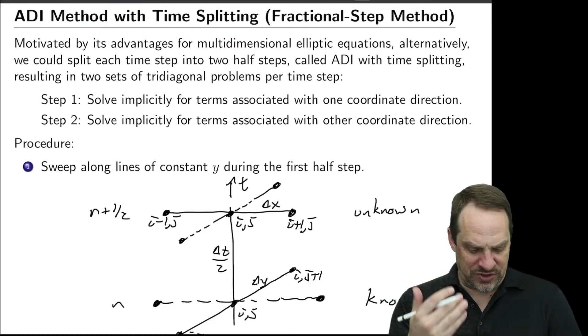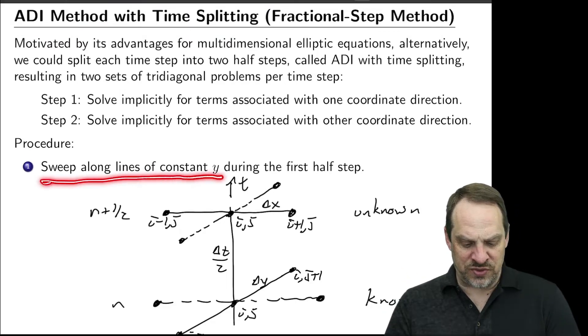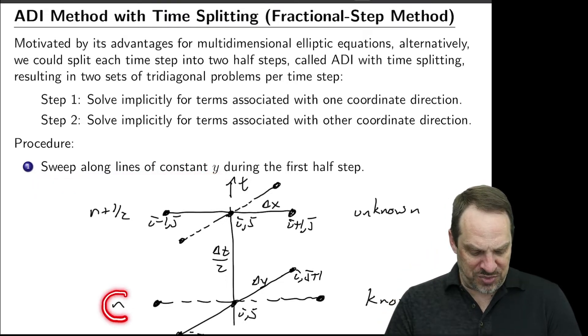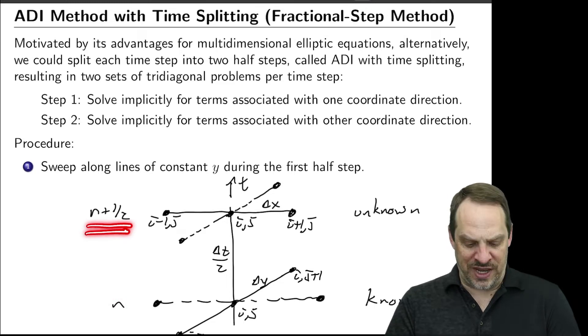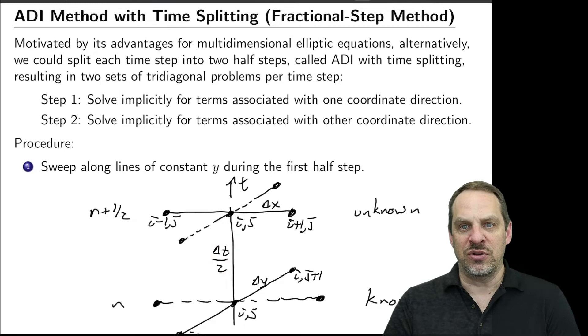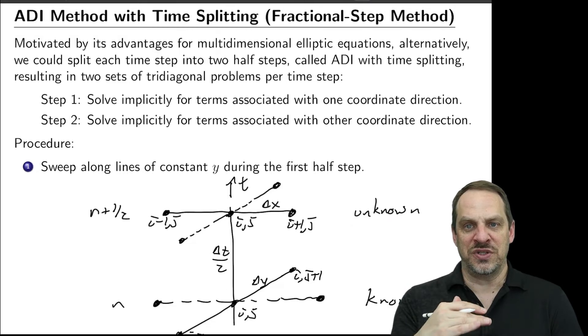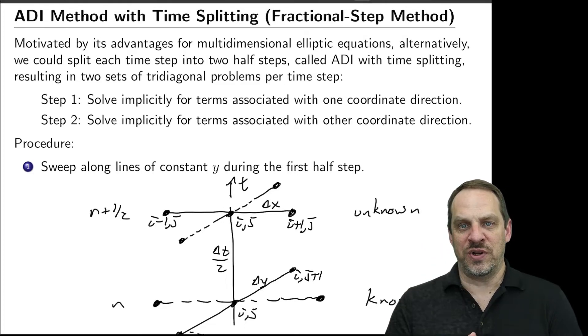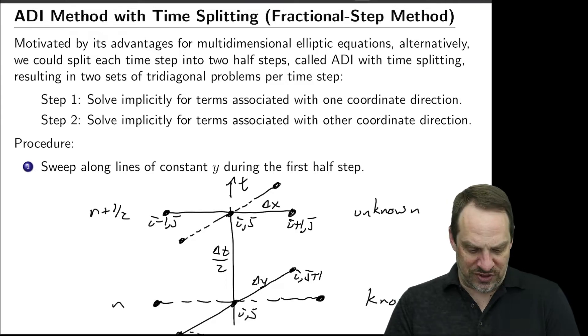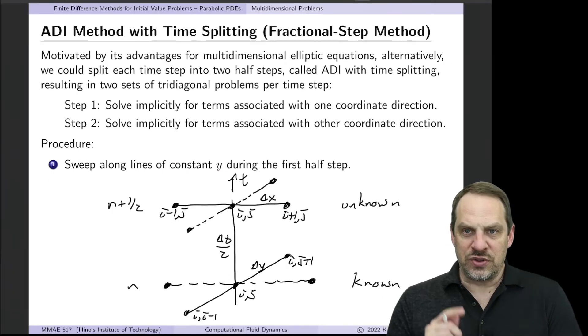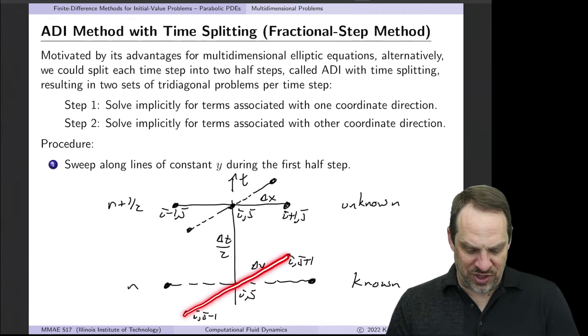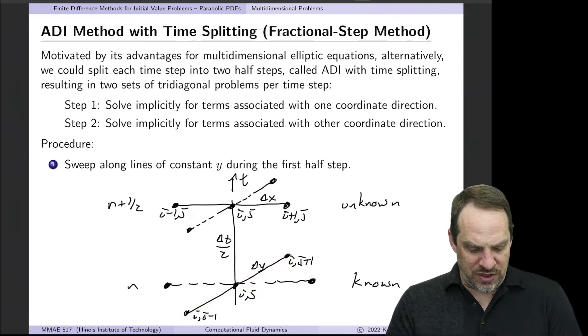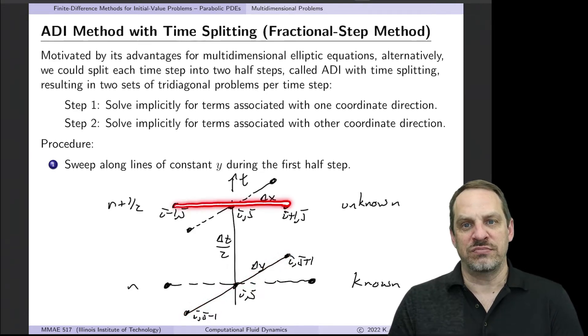So here's how it looks for that first step. If we sweep along constant y-lines first, during that first half step, then the previous time step is n, and we're going to take one half time step forward to n plus a half. So our time step now is delta t over two. So this is known, and this is unknown. Now remember, for explicit methods, all the spatial derivatives are taken at the previous time step. And for implicit methods, all of the spatial derivatives are taken at the next time level where the solution is unknown. Now we're going to split these derivatives between the two in a very interesting way so that we get a tridiagonal system of equations. So again, this is for constant y-lines. So for constant y-lines, we're going to take the partial squared u partial y squared term at the previous time level, and the partial squared u partial x squared term at the next half time level.